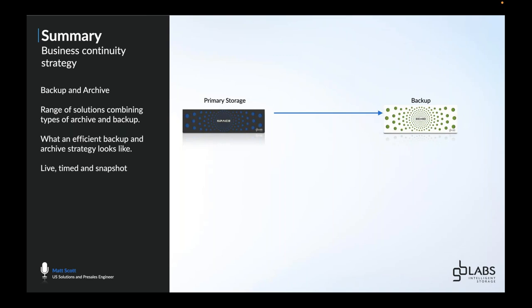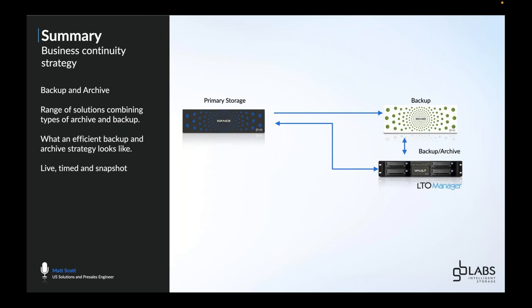These three strategies can be used on their own or in any combination to achieve the level of protection your company needs. GB Labs is very happy to discuss these options and help build a strategy that's the right fit for your company. We also offer products that work with your existing storage, whether from GB Labs or another vendor. For disk archive we offer Echo, our nearline server offering an excellent combination of cost and storage density. For tape archive we offer Vault, our LTO solution that allows you to write in either TAR or LTFS formats and create multiple tape copies simultaneously for added redundancy across multiple locations.